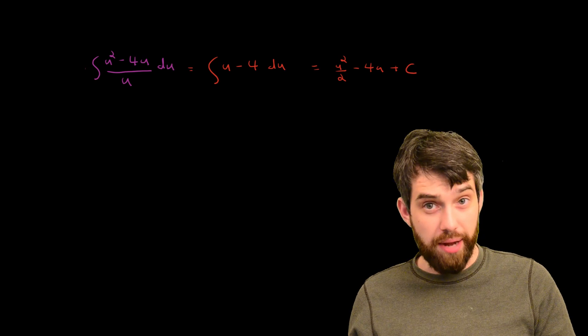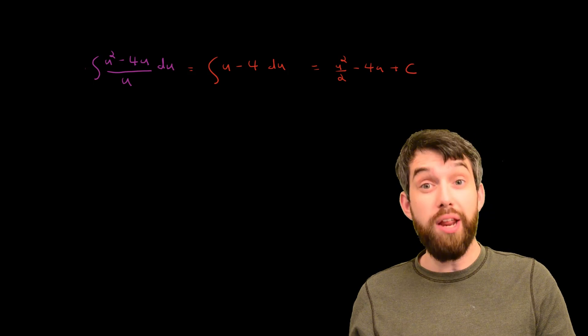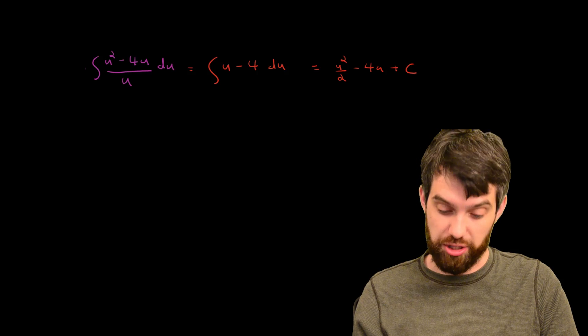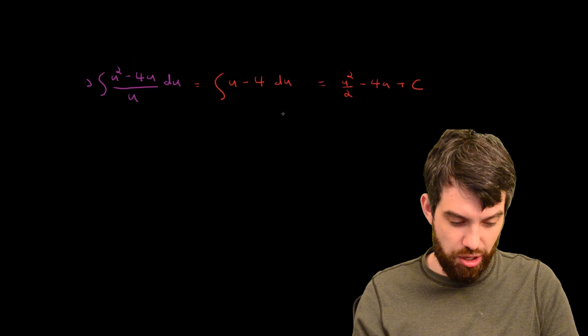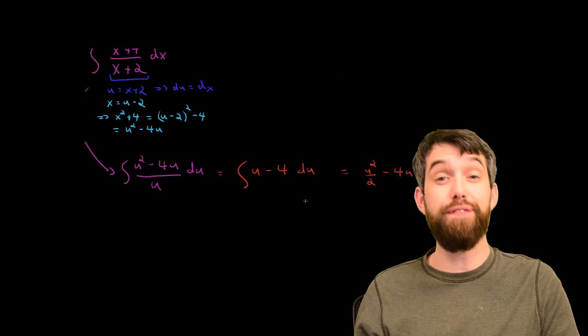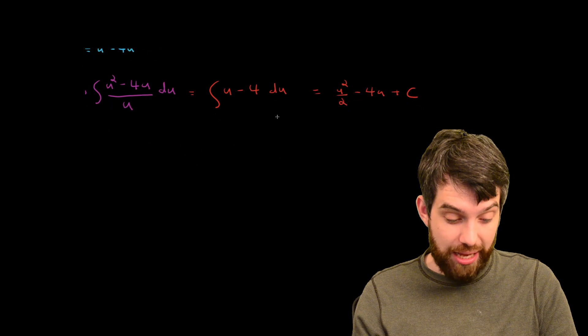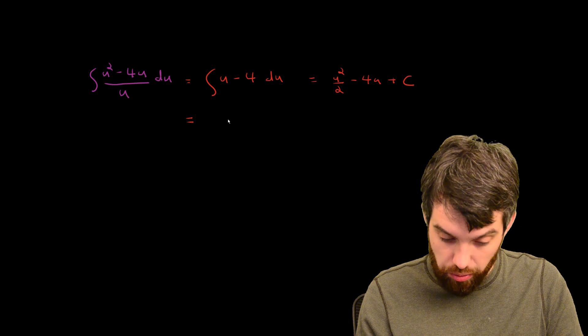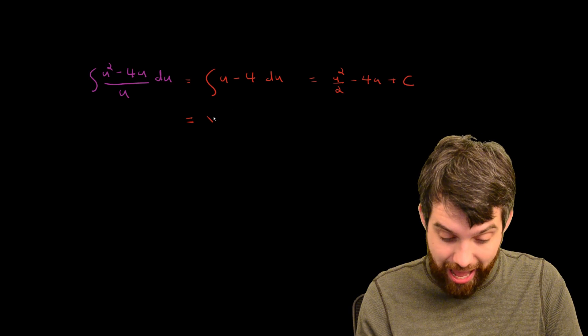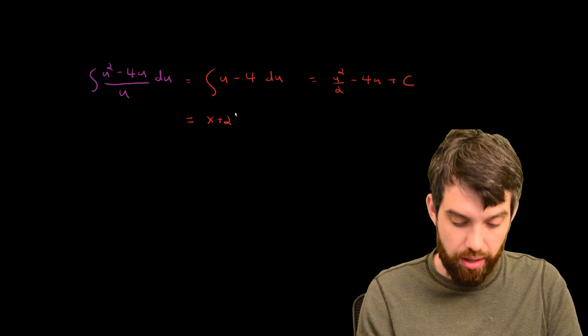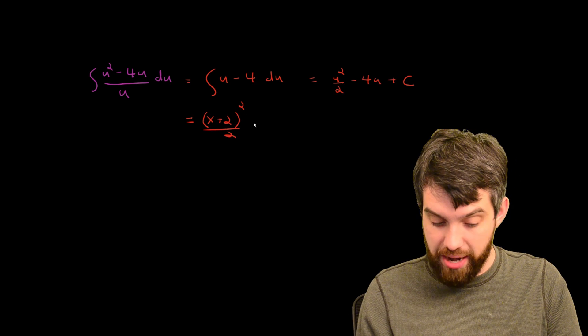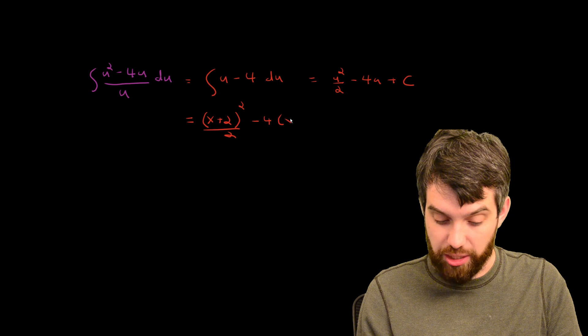Now, we're almost done, but don't forget, we want it in terms of x. Our original integral is in terms of x. Our final integral should also be in terms of x. And what was u? I've already forgotten. u was defined to be x plus 2. So I can therefore say that this is going to be equal to, instead of u, I will write x plus 2, and then it's the x plus 2 squared divided out by 2 minus 4 times x plus 2.